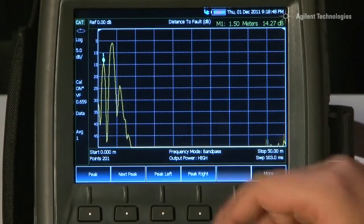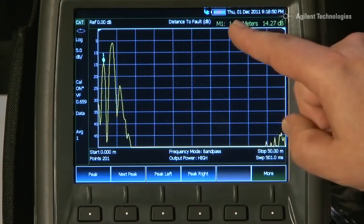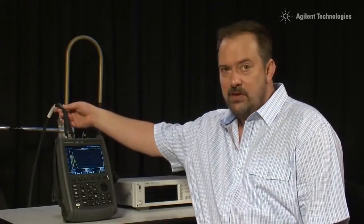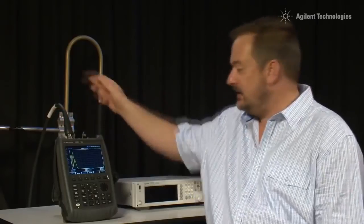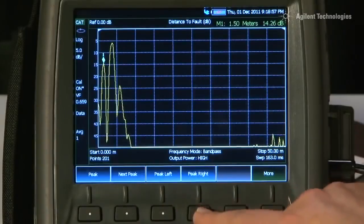And you can see this on the Distance to Fault screen. Marker 1 here is still sat at 1.5m. That is the poor quality adapter I have got between this beautiful test cable and the cable going to the antenna. If I go peak right, you can see here at 3.75m,